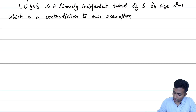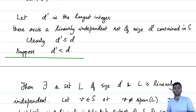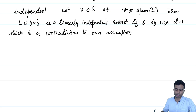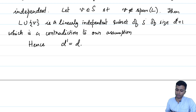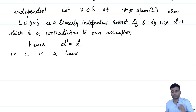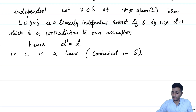Since D prime equals D, L is a linearly independent set of size D and is therefore necessarily a basis. This basis L is contained in the spanning set S, so every spanning set contains a basis, and we have proved the proposition.